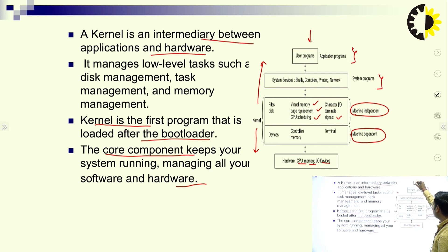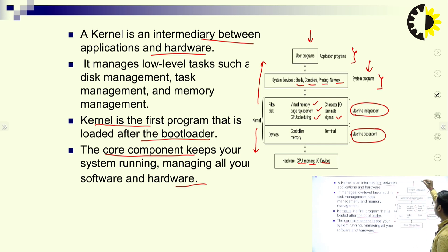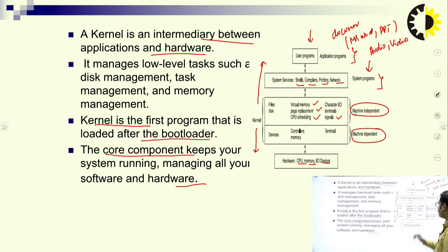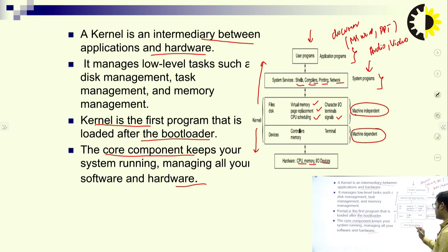Here in the diagram, we have user programs and system programs. System programs include shells, compiler, and printing network. User programs include documents, MS Word, PowerPoint, and tasks like audio and video — these are called application programs. System programs include compiler, linker, and loader. Kernel interfaces between the application programs, system programs, and hardware.